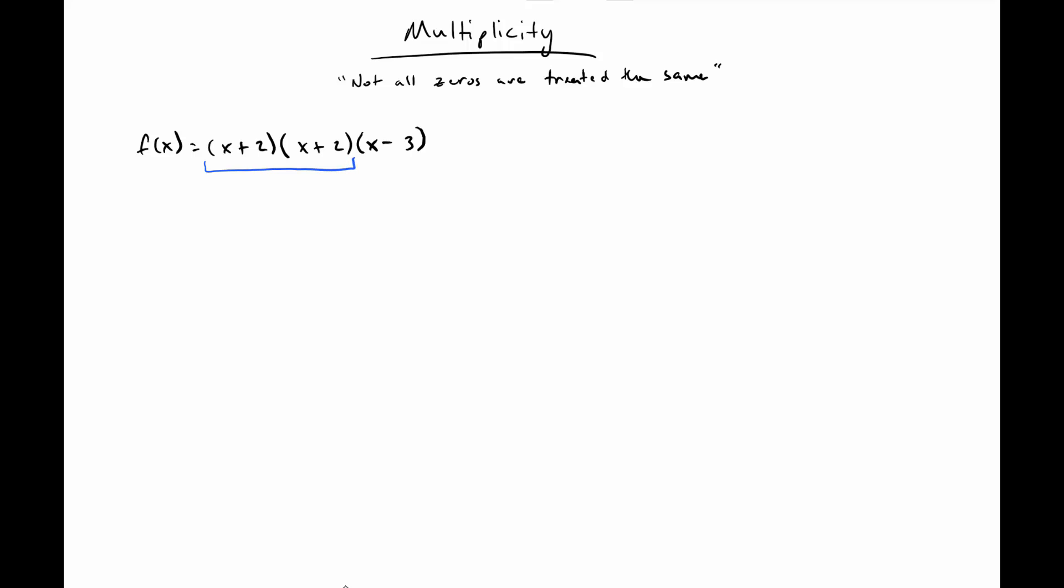So for example, the factor x plus 2, which yields the zero x equals negative 2, has a multiplicity of 2 because there's two of those factors in the prime factorization here. And of course, I'm going to make a note that is an even multiplicity.